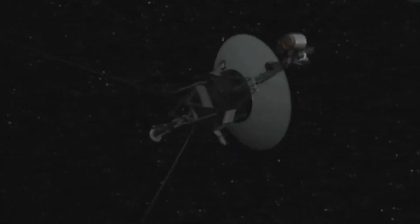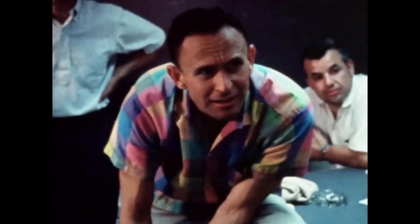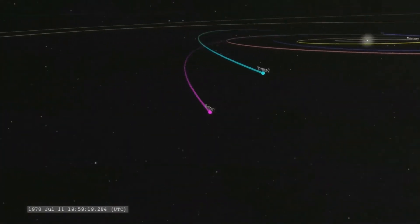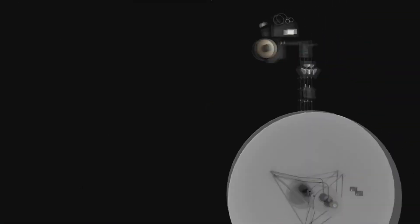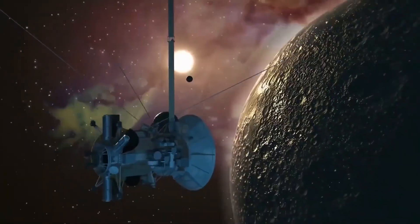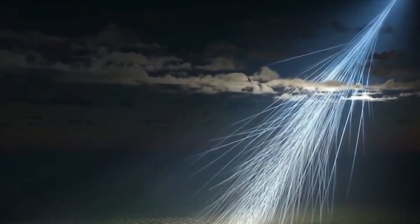Voyager's instruments detected a region of stable plasma and rising galactic radiation without any corresponding shift in the magnetic field. According to our physics, that shouldn't happen. Unless, of course, there's something interfering with our understanding. Something bigger. Something we're only just beginning to glimpse.